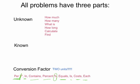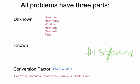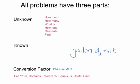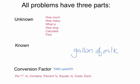As an example, you go to the store and buy some apples for $1.50 per pound. There is the per sign — that slash sign — and there are two units: dollars and pounds. The two units make it a conversion factor. In another example, a gallon of milk contains, or equals, 3.78 liters. This is another conversion factor because there are two units: gallons and liters.